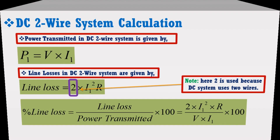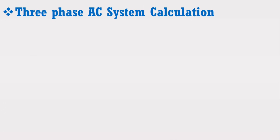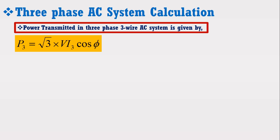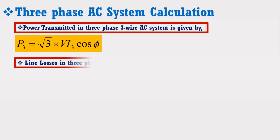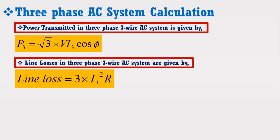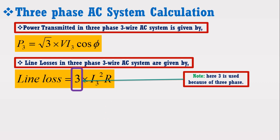Now we are going to derive the percentage line loss expression for the 3-phase AC system. We know that power transmitted in a 3-phase 3-wire AC system is given by P3 = √3 × V × I3 × cosφ. Here, 3 is used because of the 3-phase system. The percentage line loss for the 3-phase AC system is given by the following expression.